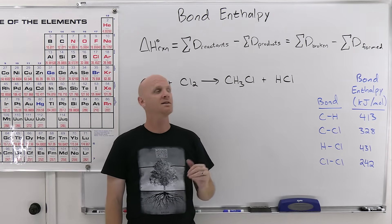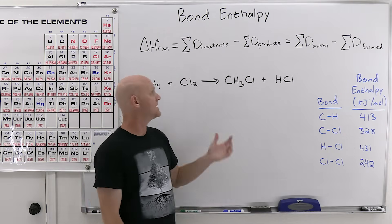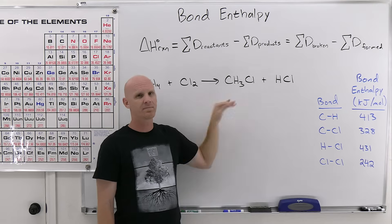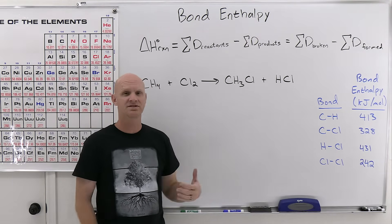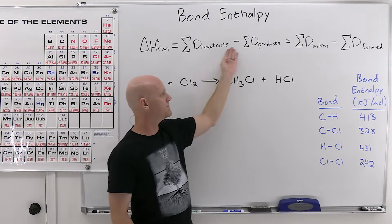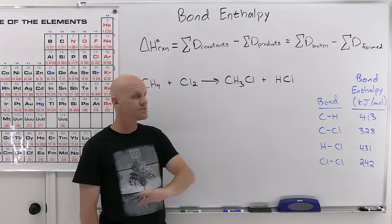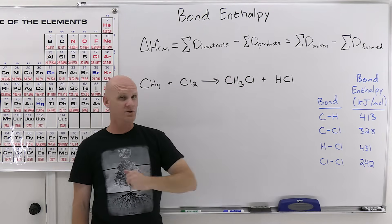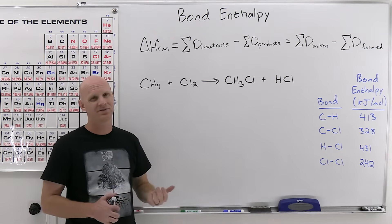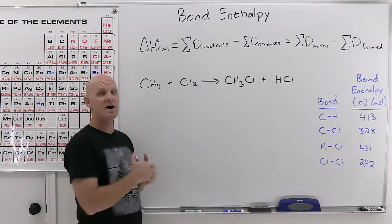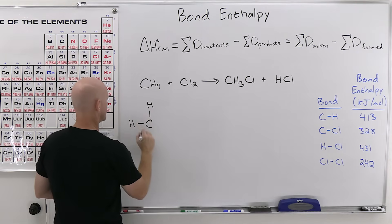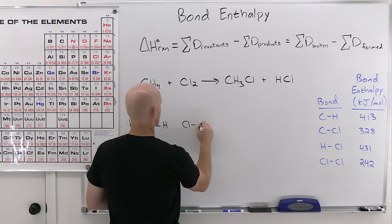Since bond enthalpy is defined as the energy it takes to break a bond, and you break bonds in the reactants, that's why we add up all the reactant values. For the products, you don't break those bonds — you form them, which is the exact opposite. That's why we subtract the bond enthalpy for products: the bond enthalpy represents breaking, so changing the sign gives forming. The subtraction in the formula changes the sign for you. To do this properly, you need to draw Lewis structures for all compounds — that's why Lewis dot structures had to be taught before this topic.